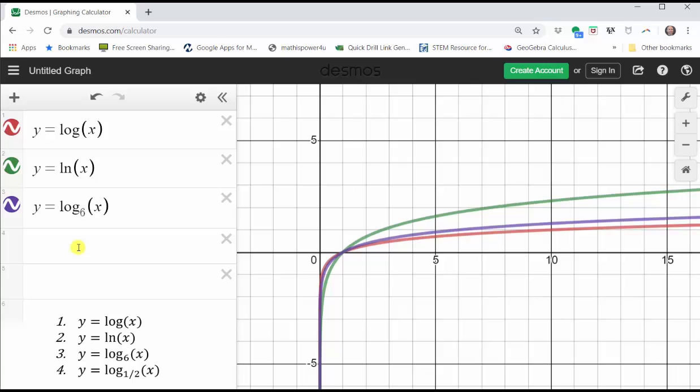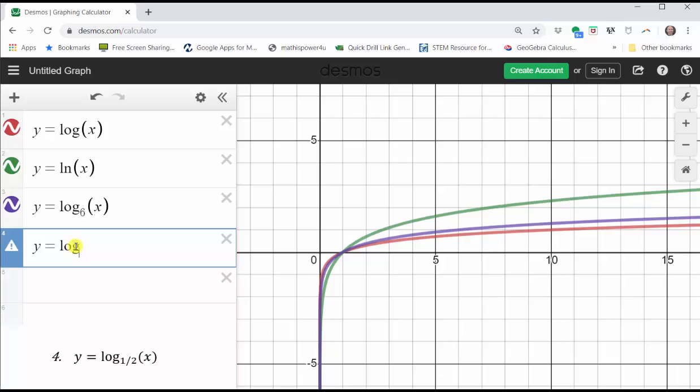And now the last log function was the one I had an issue with. For y equals log base one half of x, I tried entering y equals log underscore one divided by two, but we can see that didn't work. So next thing I tried to do was try to enter underscore, and then one half in parentheses. And this is what happened, which of course is not correct.